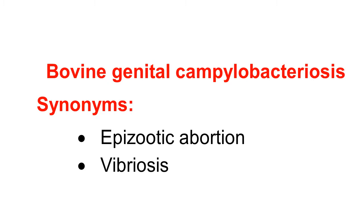In this presentation, we discuss synonyms of bovine genital campylobacteriosis. Previously, it was called Vibriosis because the name of the organism was Vibrio fetus. Now it is changed from Vibrio to Campylobacterium. The organism is now named Campylobacterium fetus fetus, and the new name for the disease is bovine genital campylobacteriosis. In some countries, it is also named for episodic abortions, which occur when a new infected bull or cow is introduced and causes an outbreak of abortion.